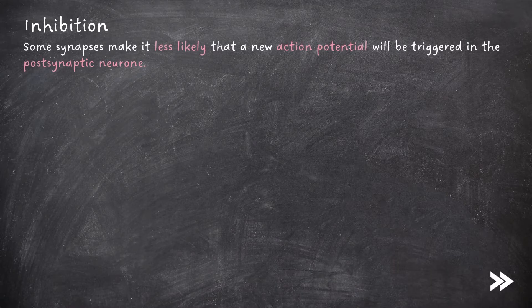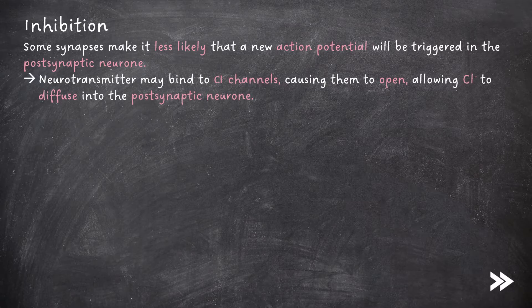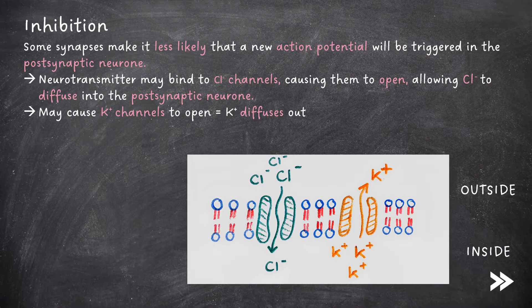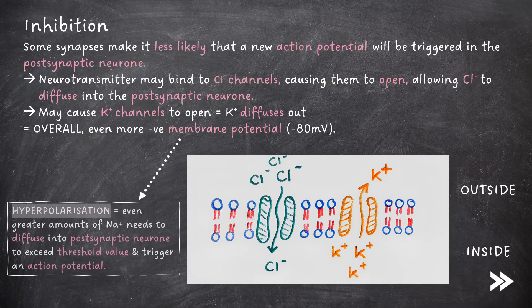Next we have inhibition. Some synapses make it less likely that a new action potential will be triggered at the post-synaptic neuron — these are called inhibitory synapses. Neurotransmitter may bind to chloride ion channels causing them to open, allowing chloride ions to diffuse into the post-synaptic neuron. They may also cause potassium ion channels to open, meaning that potassium ions diffuse out of the post-synaptic neuron and into the synaptic cleft. Overall, an even more negative membrane potential is generated, around minus 80 millivolts — this is called hyperpolarization. Because of hyperpolarization, we need an even greater influx of sodium ions to create a voltage that exceeds the threshold and triggers an action potential.